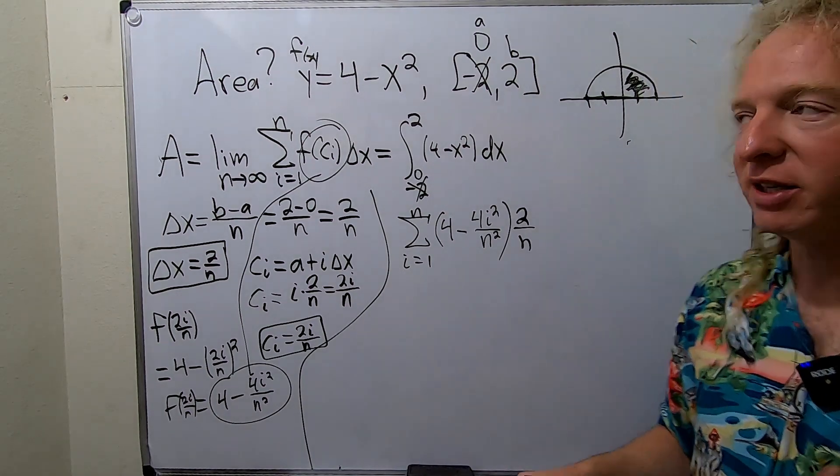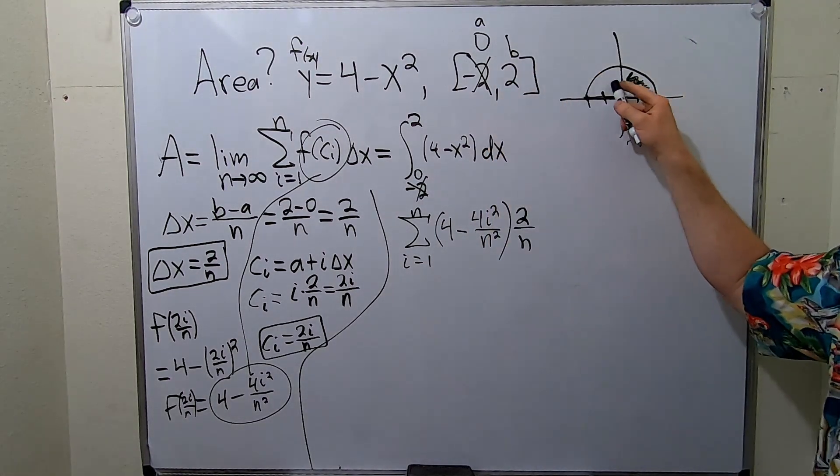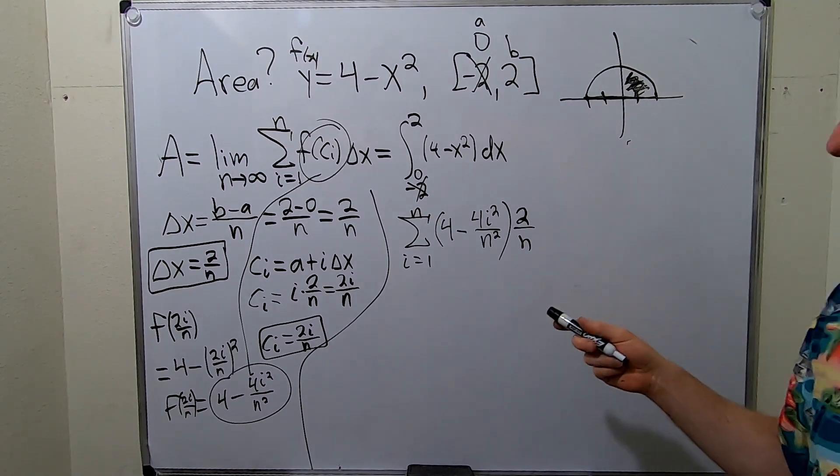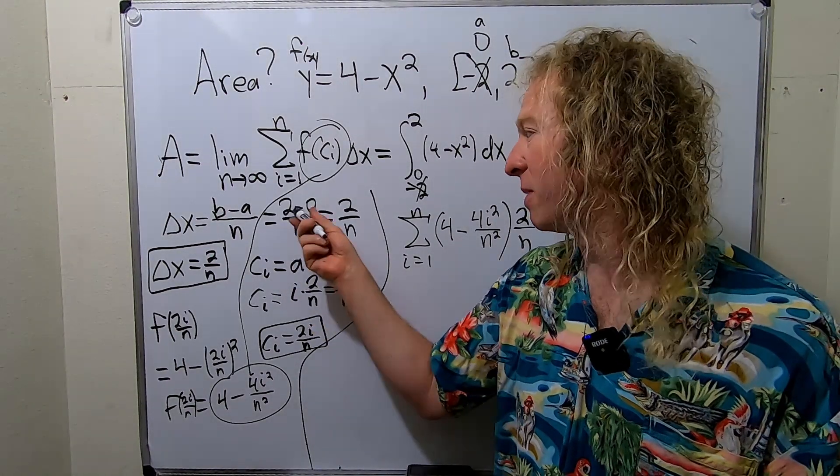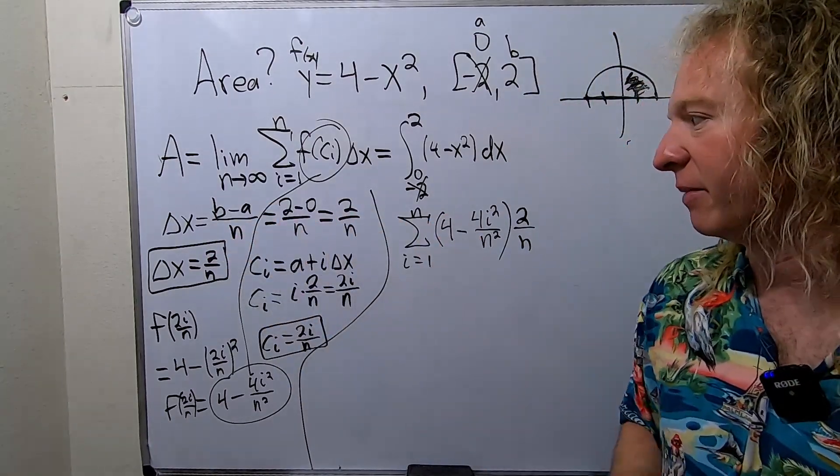So the question is to find the area under the graph of this function. We drew a picture of the graph. We decided, hey, instead of finding the whole area, let's find half of it and multiply the answer by 2. We did that because it makes the a equal to 0. It makes it really nice. So step 1, you find your delta x. It's b minus a over n. You get 2 over n. So really important to know this formula.